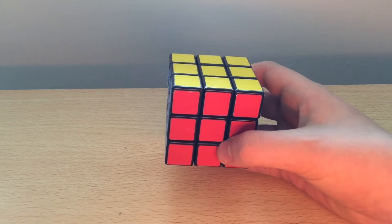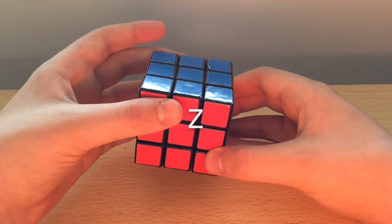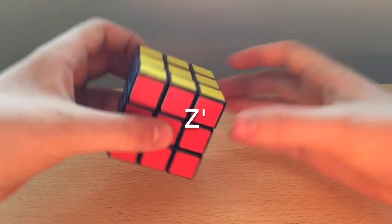And then finally, if we have a Z move, we're going to move it like this. And if we have a Z dash move, we're going to move it like this.